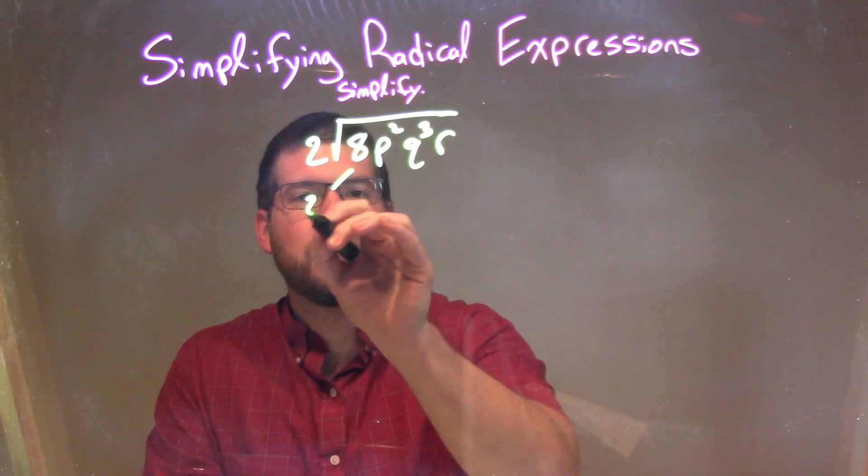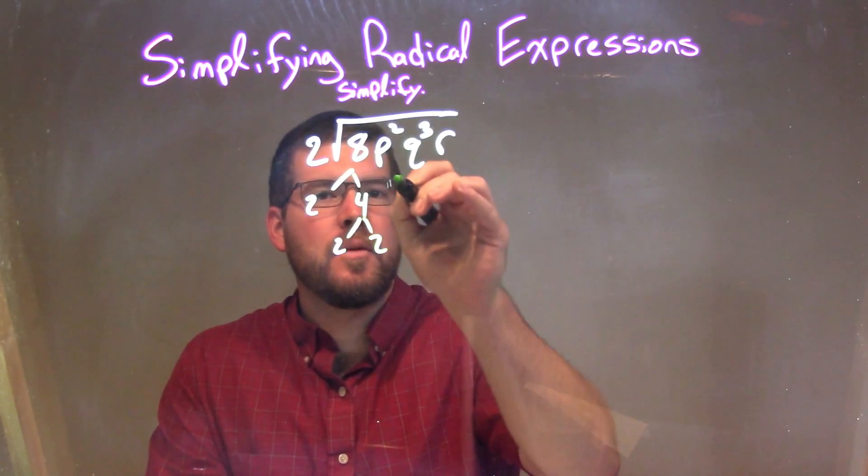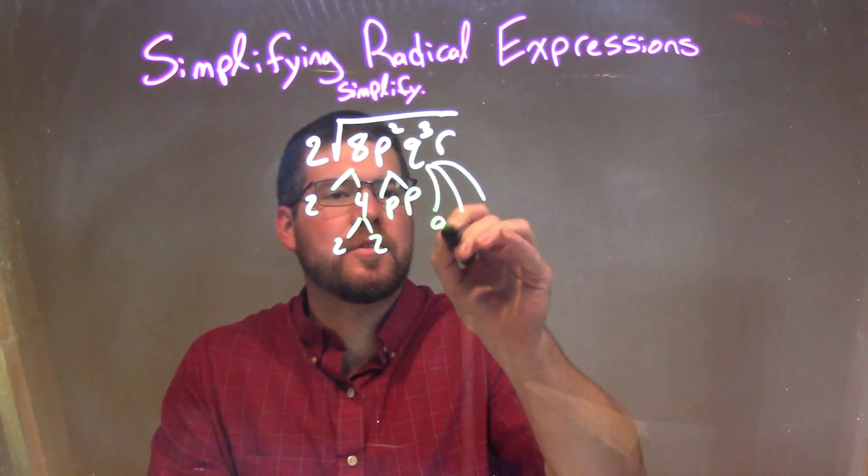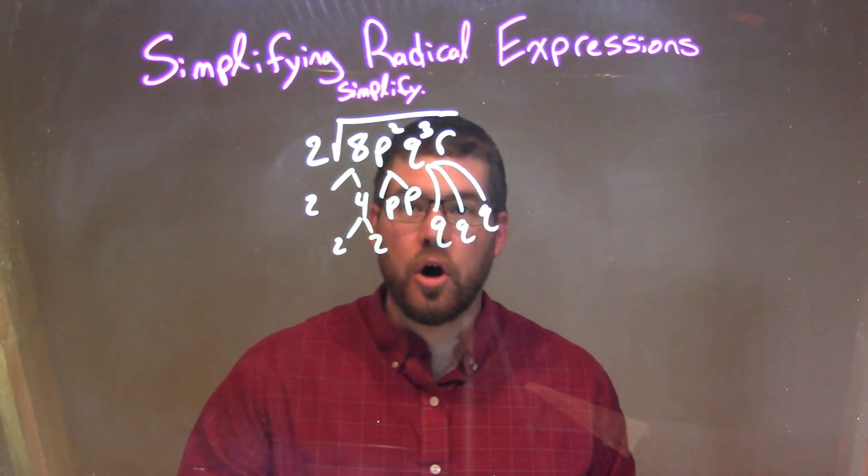8 can be broken down to be 2 times 4, and 4 is 2 times 2. p² is p times p, q³ is q times q times q, and r is just r.